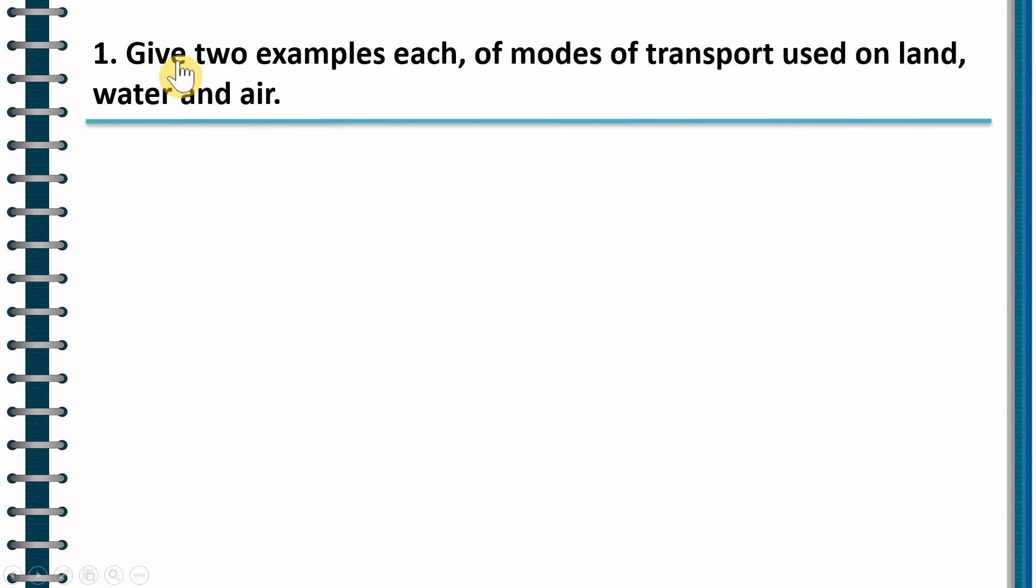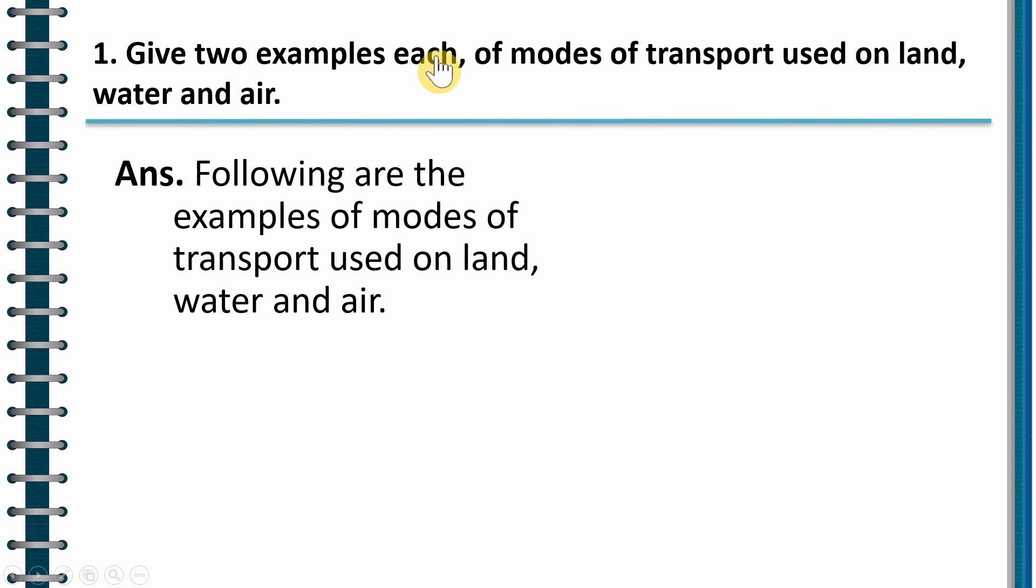First question: Give two examples each of modes of transport used on land, water and air. And the answer to this question is, following are the examples of modes of transport used on land, water and air. And what are those modes?